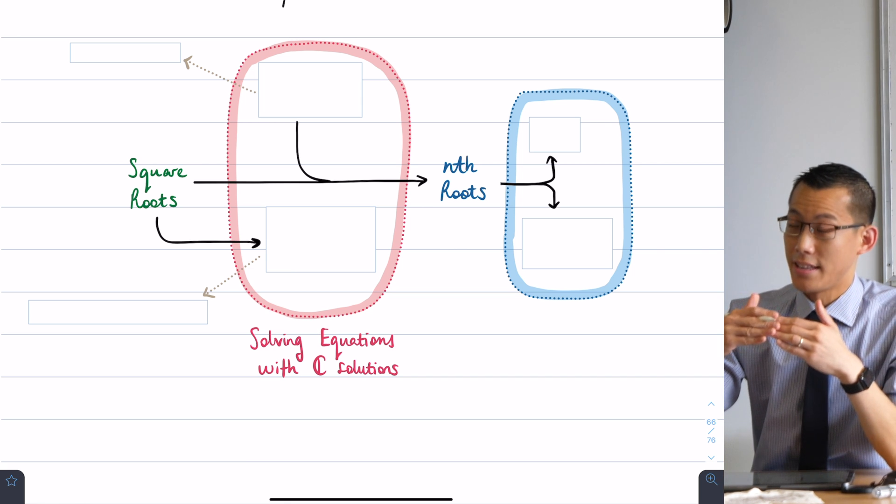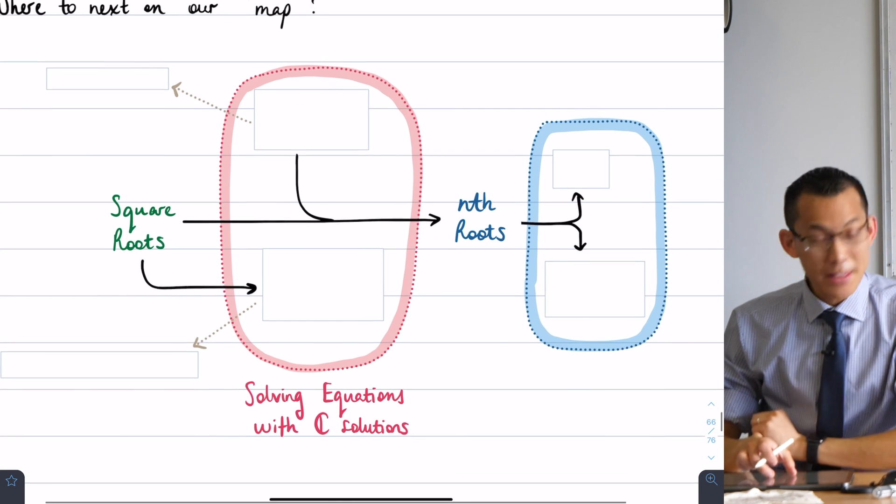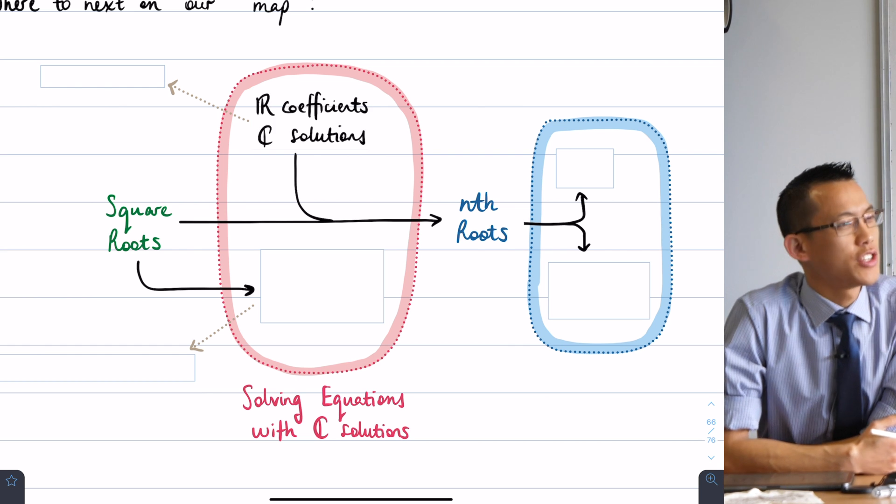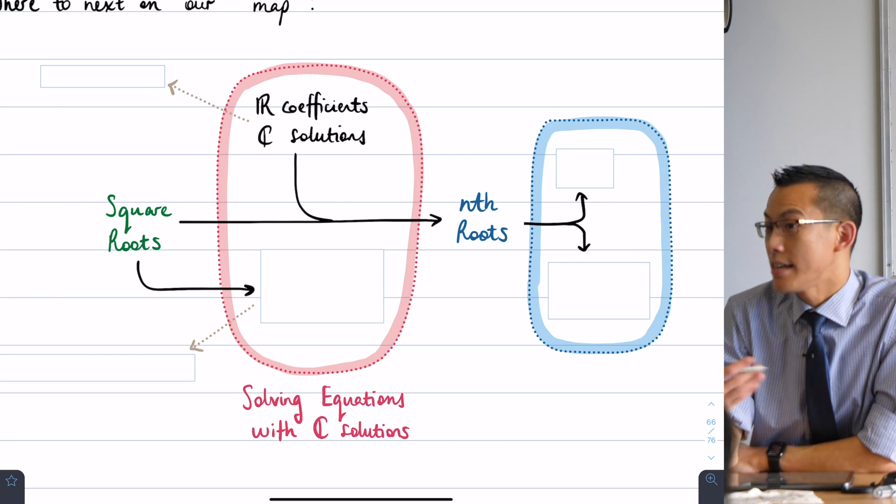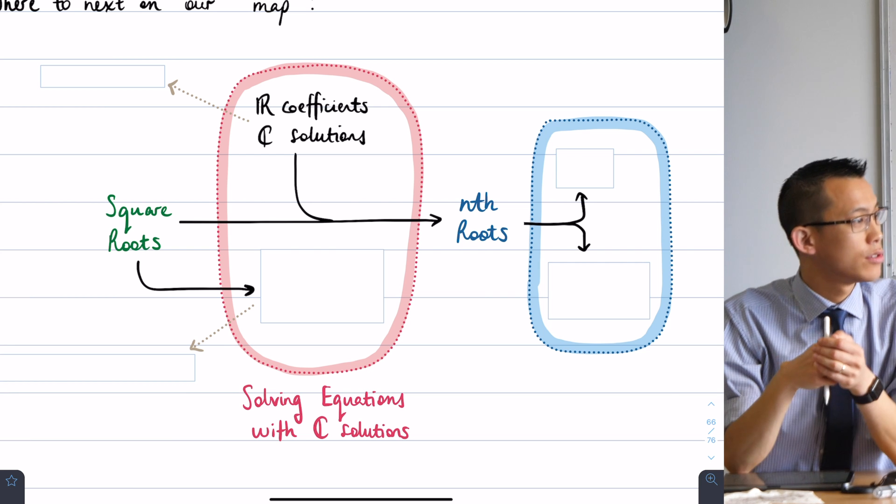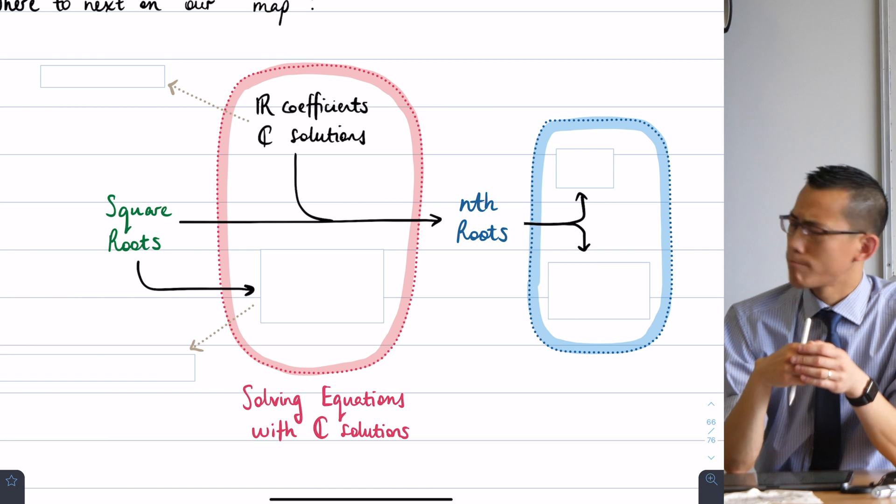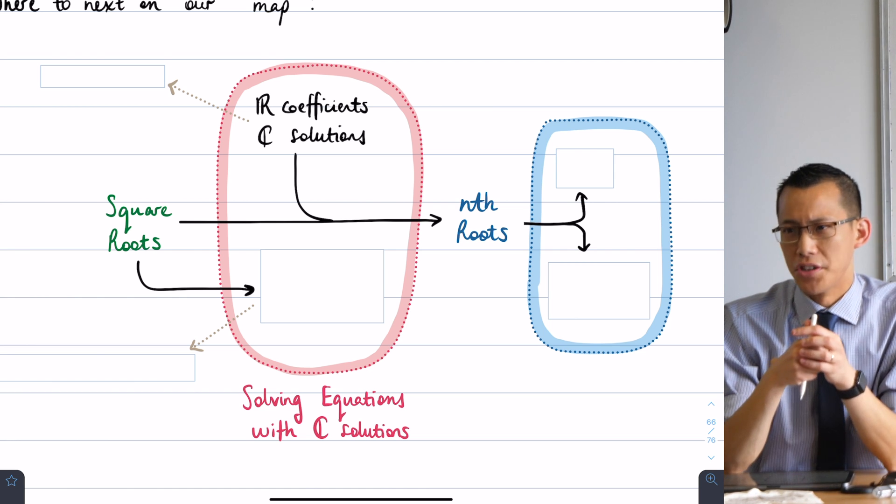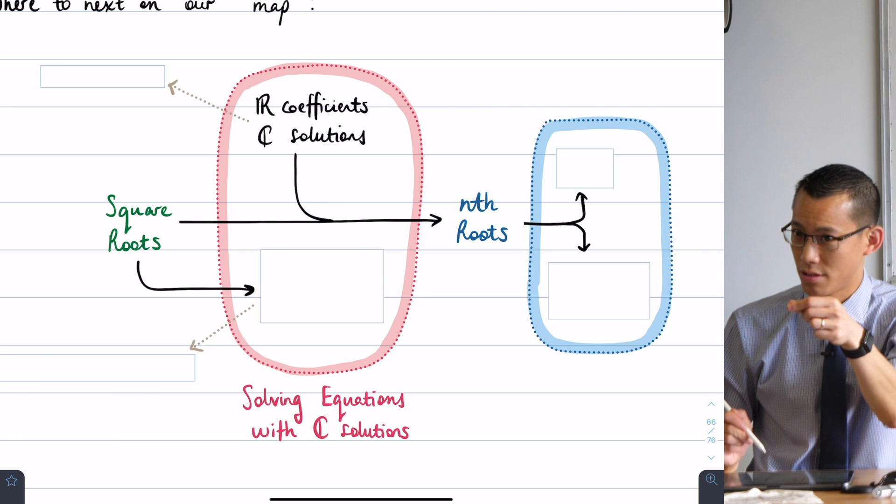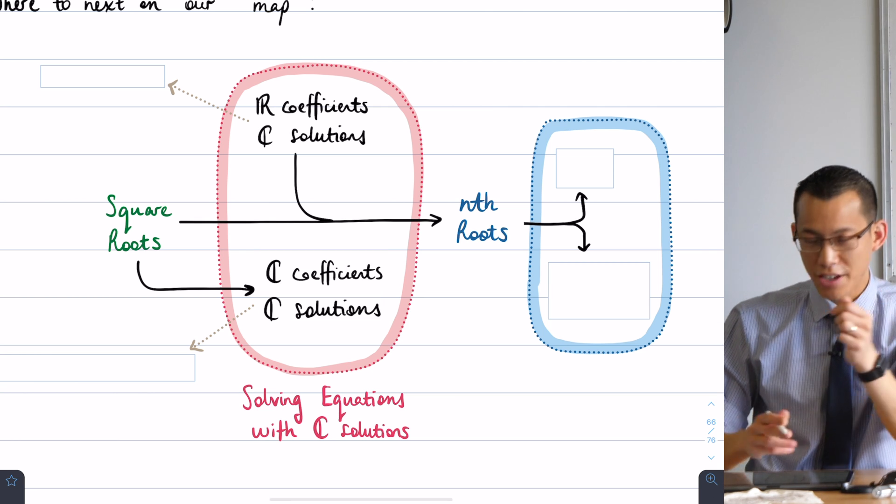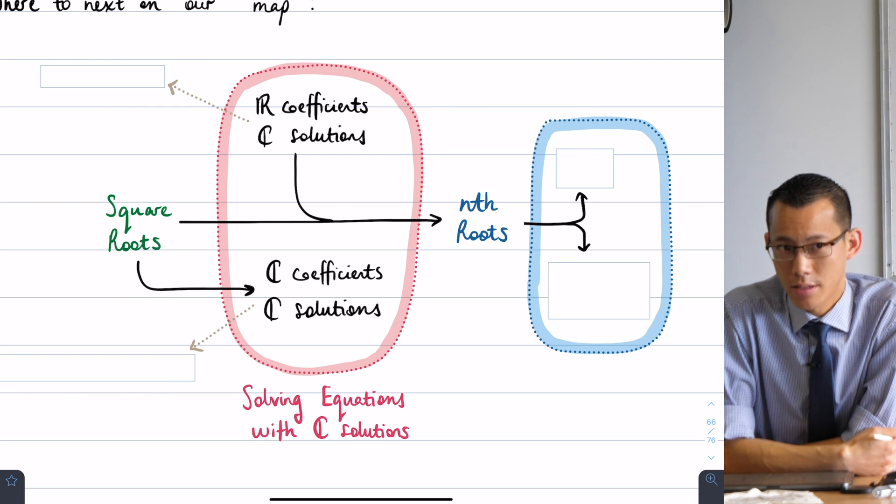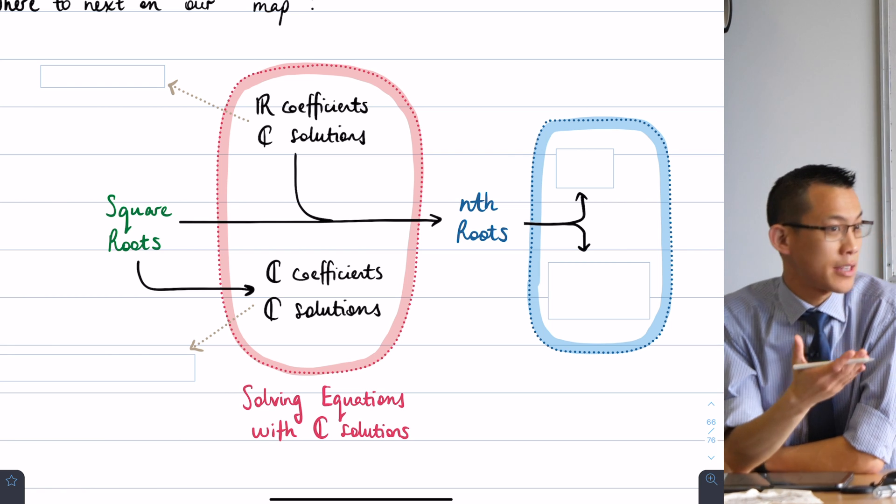From square roots, if we combine that with solving equations which have real coefficients but end up with complex solutions, those two skills together will allow us to solve nth roots next week. But now that we know about square roots, there's actually another kind of equation we're going to deal with today: not when you have real coefficients that lead to complex solutions, but we can actually make the coefficients of our x's and our z's complex as well.